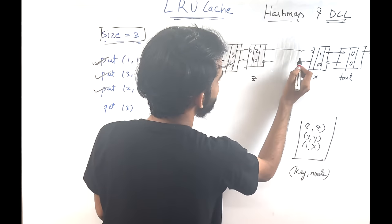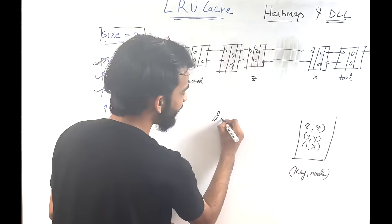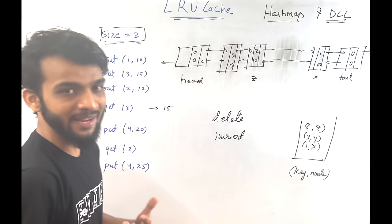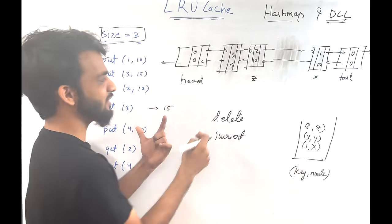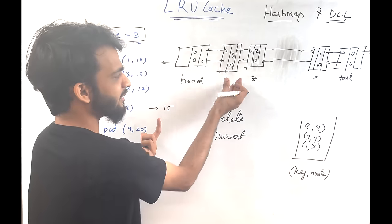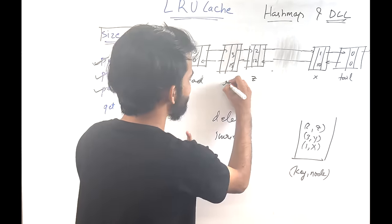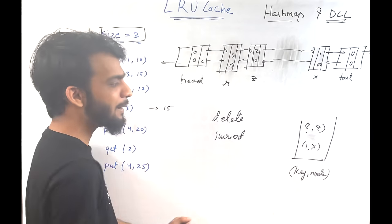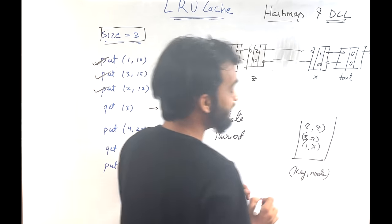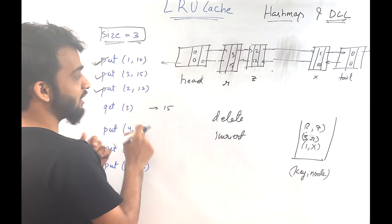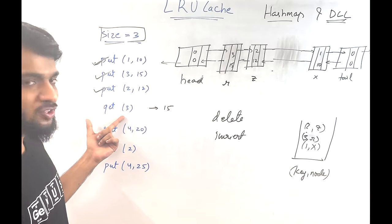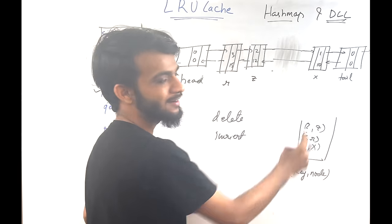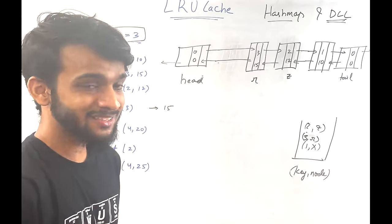After deleting and reinserting (3,15) right after head, it gets a new address R. So we remove the old address Y from the hash map and insert key 3 with address R. Now the order is: 3 most recently used, then 2, then 1. The order is maintained correctly.